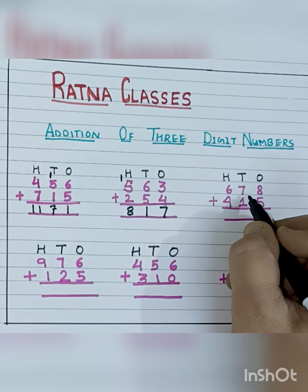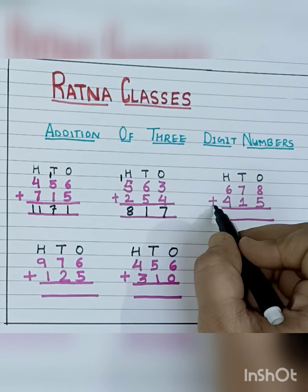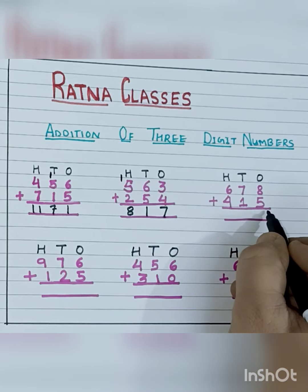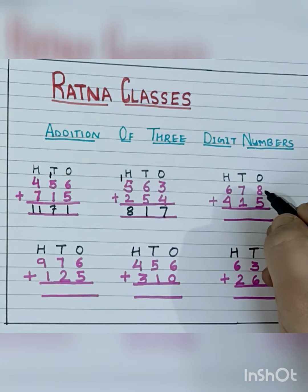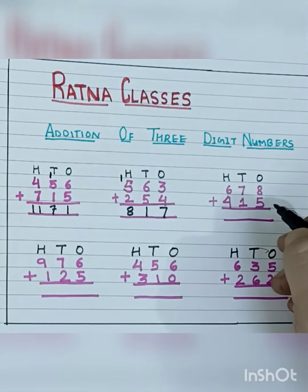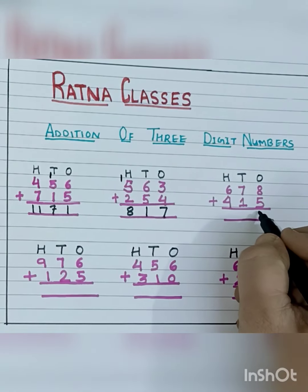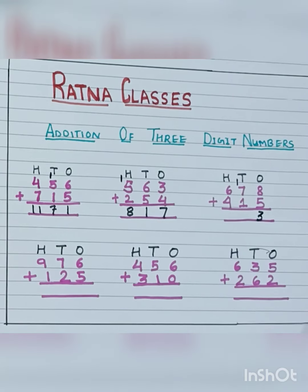Now the next sum is 678 plus 415. First of all, which place will we add? The 1's place. So this is 8 plus 5, which equals 13. 13 is a two digit number, so we will write 3 here and take 1 carry over.